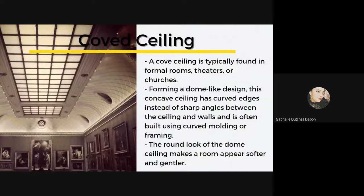Now, the cove ceiling. A cove ceiling is typically found in formal rooms, theaters, or churches — the Vatican, for example, houses one of the most famous cove ceilings in the world, forming a dome-like design. This concave ceiling has curved edges instead of sharp angles between the ceiling and walls, often built using curved molding or framing. The round look of the dome ceiling makes the room appear softer and gentler, and these ceilings can also serve as a way to separate one room from another.